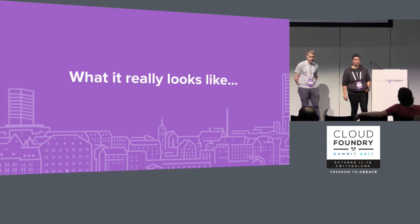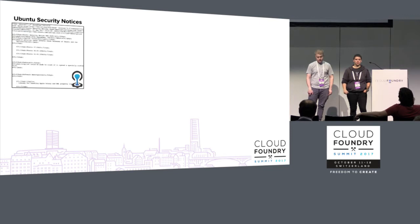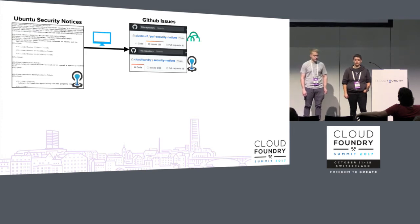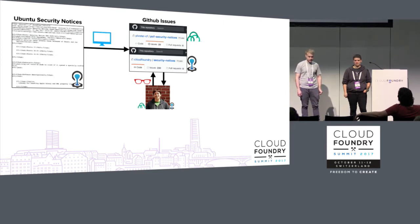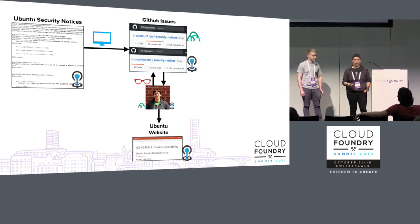We went through what it theoretically looks like to patch the stem cell for USNs. To give you an idea of what it really looks like — this is the Ubuntu security notices RSS feed, and this is basically pre-Davos, what we were doing a few months ago. We did have some automation built by the Buildpacks team that would feed that RSS into GitHub issues. We had a private Pivotal repo and a private open source repo that would both get the notifications from Canonical. I would look at the Ubuntu website to figure out the severity of the USN — because a USN contains many CVEs, you look through all of them, and whatever has the highest severity, we assign the USN that severity.